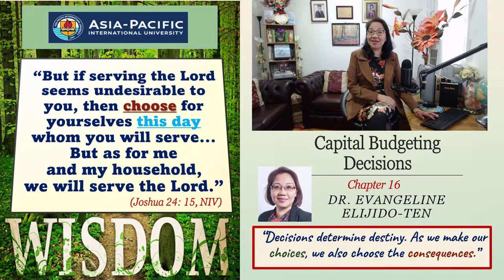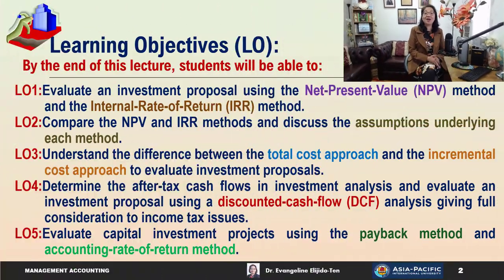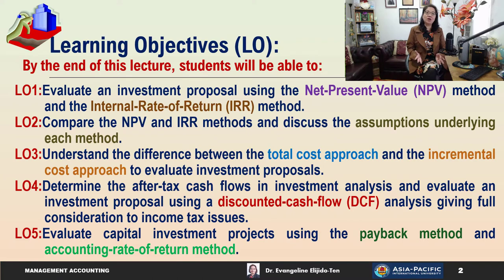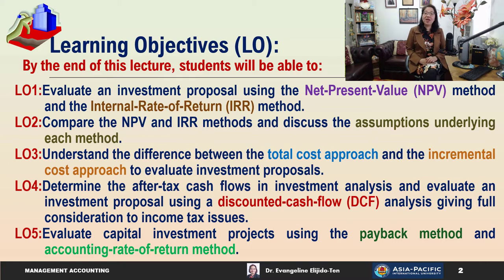In this topic, we are going to have five learning objectives. There are quite a few terms you will encounter, such as net present value (NPV), internal rate of return (IRR), discounted cash flow (DCF), payback, and accounting rate of return.